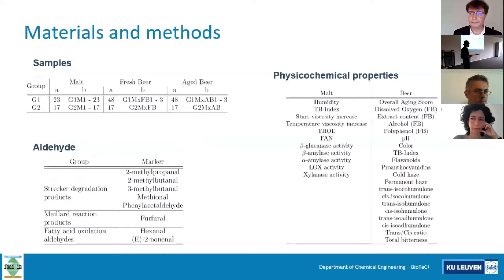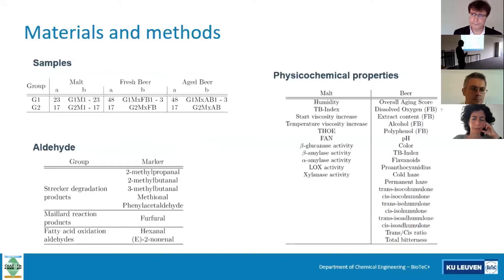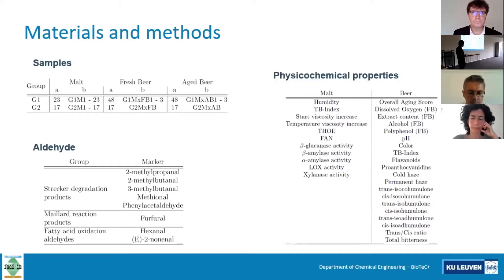So the materials and methods. As I mentioned, this is a collaboration. The samples and data used for this research were produced, processed, and tested in the enzyme laboratory and the fermentation and brewing laboratory here. These samples correspond to two groups. In the first group, we had 23 samples of different malts that were brewed to obtain fresh beer and then stored to obtain aged beer. For these first samples, we had measurements of both the aldehyde contents through the process and the physical-chemical properties of the malt and beer at every stage.